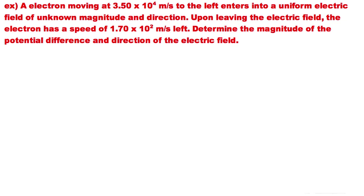Okay, we've got an electron moving initially at 3.50 times 10 to the 4 meters per second to the left. It goes into a uniform electric field. We don't know the magnitude or direction of the uniform electric field. When it leaves the electric field, the electron's got a speed of 1.70 times 10 to the 2 meters per second to the left. So it slows down, but it's still going in the same direction.